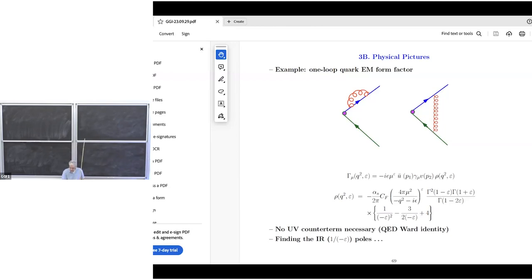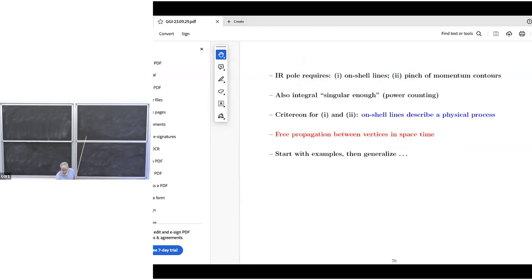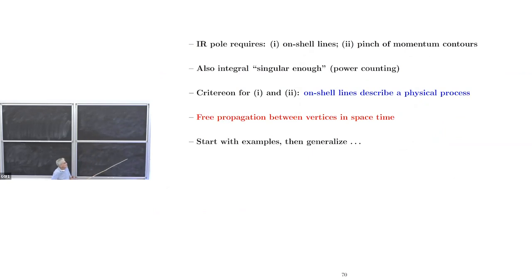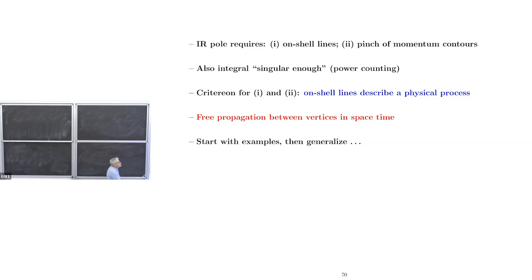We want to learn how they came about in this diagram, and we want to learn how they come about in general, at least for some classes of processes. And that's our goal in the next few slides. So here was the infrared pole — on-shell lines and a pinch of momentum contours. What we're working for is, as announced last time, that we were trying to show the on-shell lines correspond to physical processes in the classical description, where the particles are just point masses moving at the speed of light. We'll start with examples and then generalize.